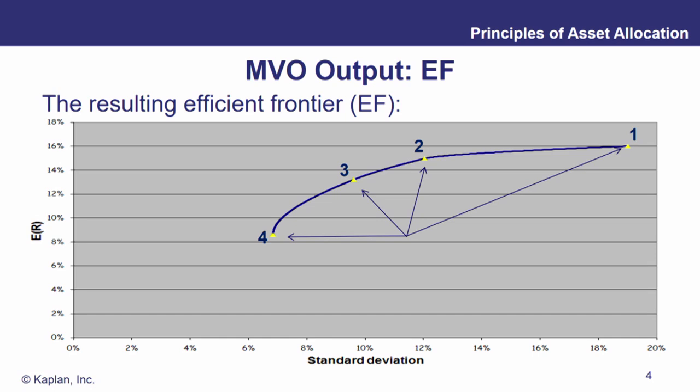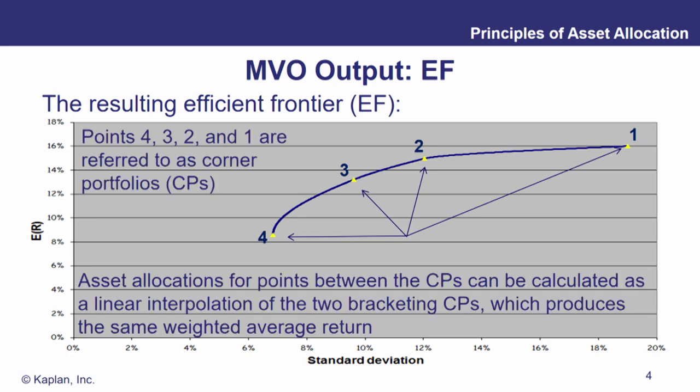We're going to mark off four points: the two endpoints — one and four — and also two points in between — two and three. We refer to these as corner portfolios. They're not corners per se because it's a curve, but think of them as inflection points where you can see how the slope is changing. For asset allocations between those corner portfolios, we can calculate them as a linear interpolation of the two bracketing corner portfolios.